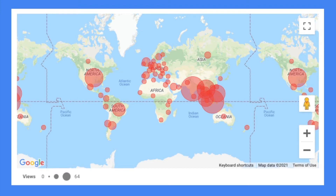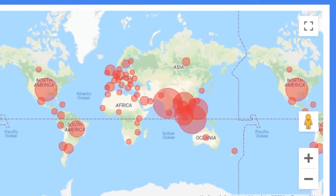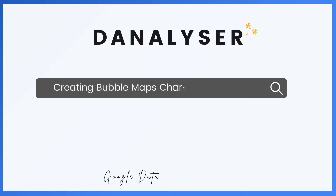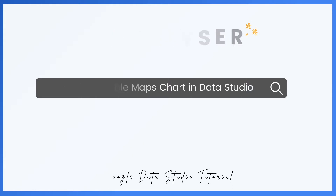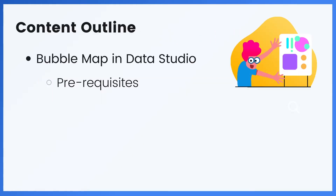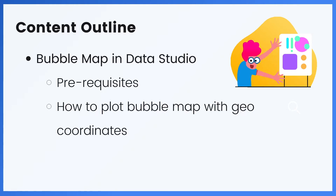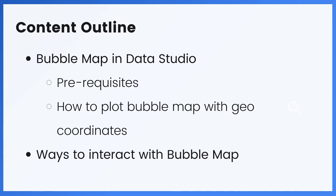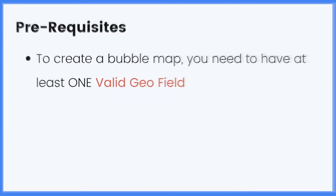People like map visualization because they are easy to grasp, visually appealing, and entertaining. In this tutorial we're going to create a bubble map in Data Studio. First we are going to talk about some prerequisites you should take note of, and next we are going to plot a bubble map with draw coordinates like latitude and longitude. Lastly we'll also learn how to interact with the map.